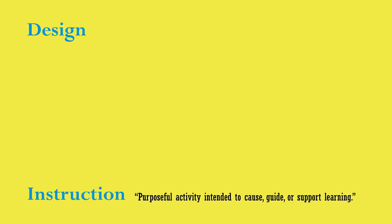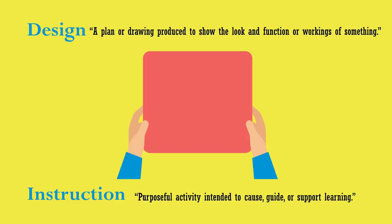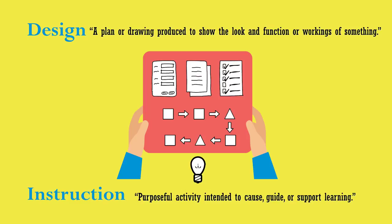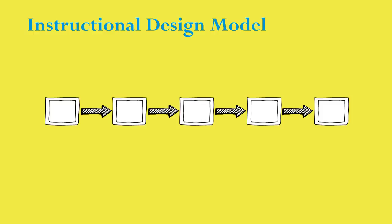We have a working definition of instruction. How about design? What is design? A lookup of the word design in a dictionary will produce something like this: a plan or drawing produced to show the look and function or workings of something. Take instruction and look at how instruction is designed or how an end product is produced. If the instruction is purposeful activity intended to cause, guide, or support learning, instructional design is the plan of the purposeful activity. If we look at instructional design as a set of rules or procedures for creating instruction, then we can further ask: what is an instructional design model? A model is a simplified representation used to explain the workings of a real-world system or event. The main goal of an instructional design model or process is to construct a learning environment in order to provide the learners with the conditions that support learning.